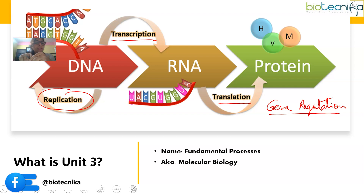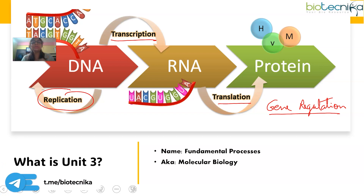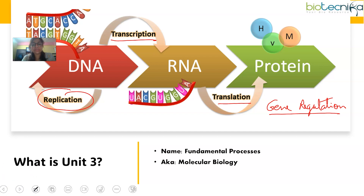All of these processes — replication, transcription, and translation — which we also call the central dogma, happen in both eukaryotic and prokaryotic cells. The syllabus covers both eukaryotic and prokaryotic processes, and gene regulation is discussed for both eukaryotes and prokaryotes as well.